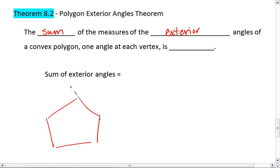1, 2, 3, 4, 5. And all 5 of these exterior angles will sum to 360 degrees. Always. So sum of the exterior angles is 360 degrees.